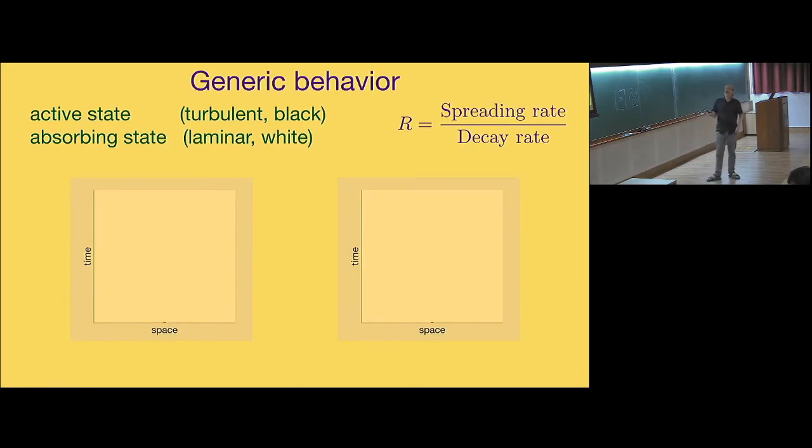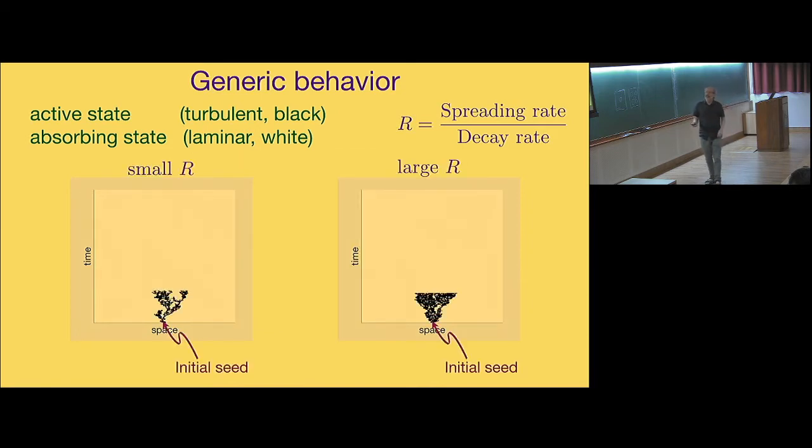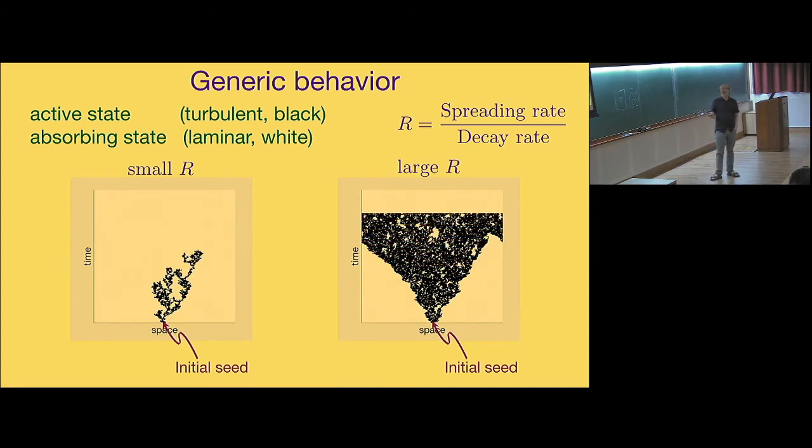This is the generic situation. I have an active state, which I think of as turbulence, it'll always show up as black. An absorbing state, which I think of as laminar flow, will always show up as white. I have a control parameter, which generically is a spreading rate versus a decay rate of the active state. What you're going to see here is generic simulations, a coupled map lattice. The on-site dynamics is given by this tent map with an absorbing state here. I'm just going to play the simulations: space, time, one-dimensional. Below some critical value, I don't percolate. Above some critical value, I do. I assume these are well-known ideas here.